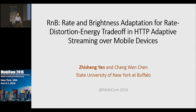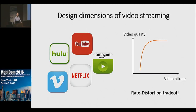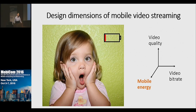Our work today is RMB, a rate and brightness adaptation framework for energy-efficient mobile video streaming. Video streaming has been a killer application for mobile devices, and traditionally there are two design dimensions: the video bitrate and the video quality. By balancing these two aspects, we have the classic rate-distortion trade-off. However, for mobile video streaming, there's another equally important design dimension: the mobile energy.